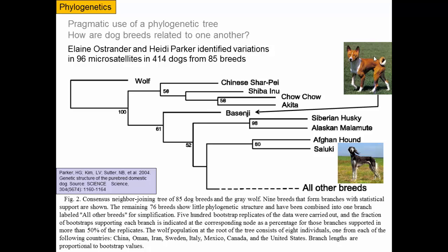Basenji is off on its own — they only go into estrus once a year instead of twice, and they yodel instead of bark. Husky and Malamute have a very high bootstrap number and are sister taxa — not entirely surprising since they look very similar. Same for Afghan Hound and Saluki. These breeds that still look a lot like wolves came off first in the phylogeny, and then there's a separation for these ancient-looking groups.